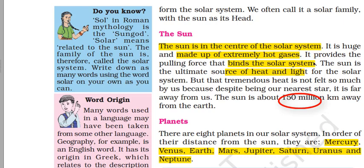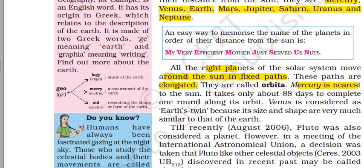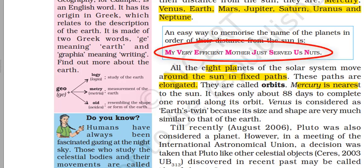There are eight planets in our solar system. In order of their distance from the sun: Mercury, Venus, Earth, Mars, Jupiter, Saturn, Uranus, and Neptune. The easiest way to remember this order is the mnemonic: 'My Very Efficient Mother Just Served Us Nuts.' The first letters help you remember the names of the planets in order.